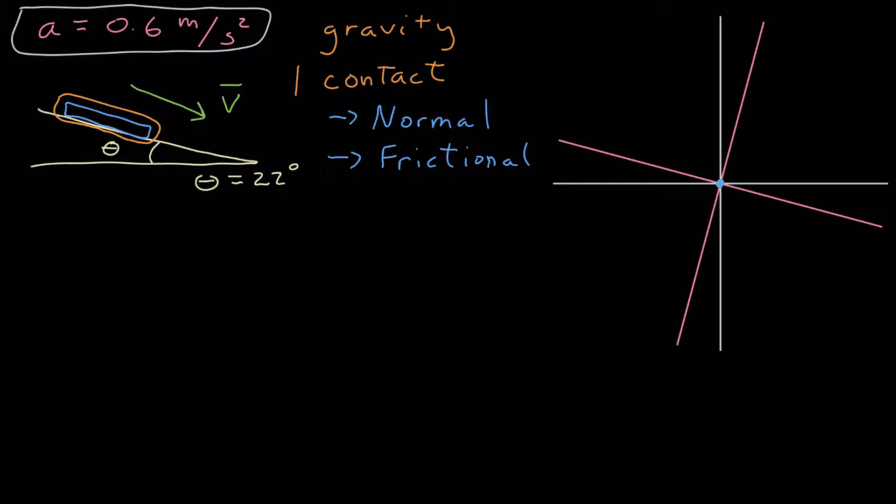Because of that, for my free body diagram, I'm going to start with two sets of axes. One parallel and perpendicular to the ground, and the other parallel and perpendicular to the incline. I identify the angles between my axes that correspond to this angle, 22 degrees, because that's something I know, and it will help me find my components for my forces.